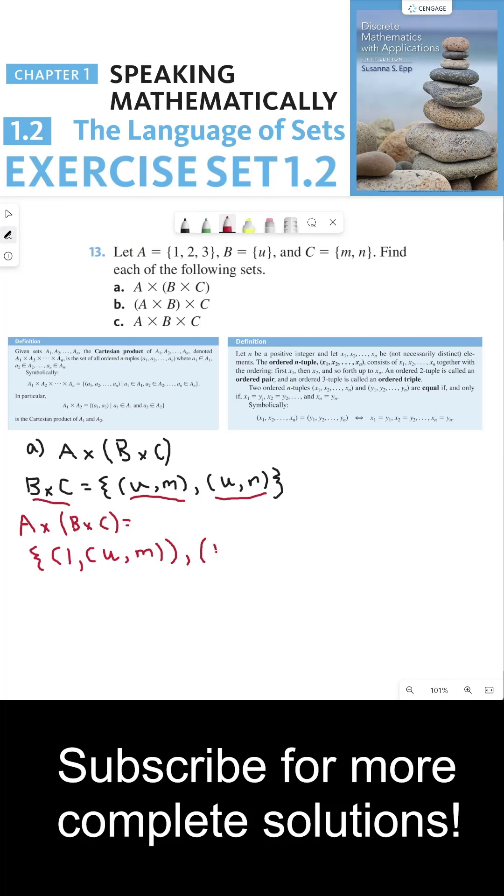We could do one comma U, N. It's another element in B cross C that I could pick for the second element, my ordered pair. I could pick a different element for my first element in the ordered pair. For example, I could pick two, which is in A. And then I could pick U, M. I could pick two and the other element from B cross C, which is N, three, and U, M. And I could do three and U, N.